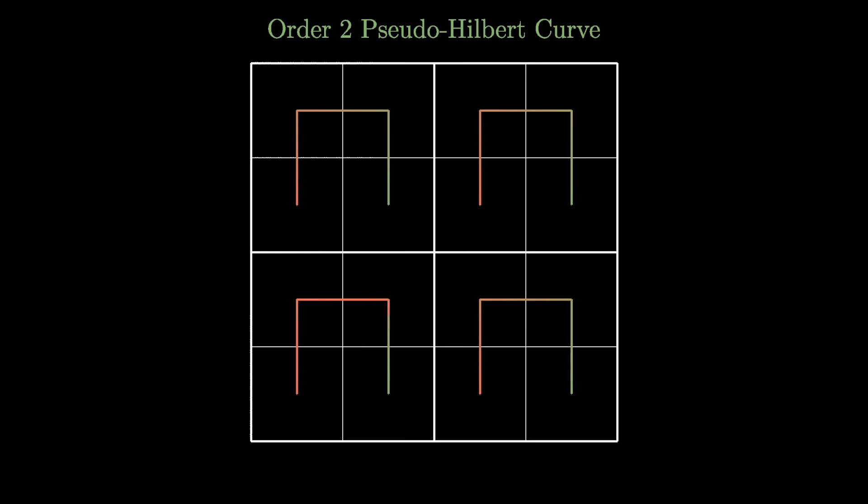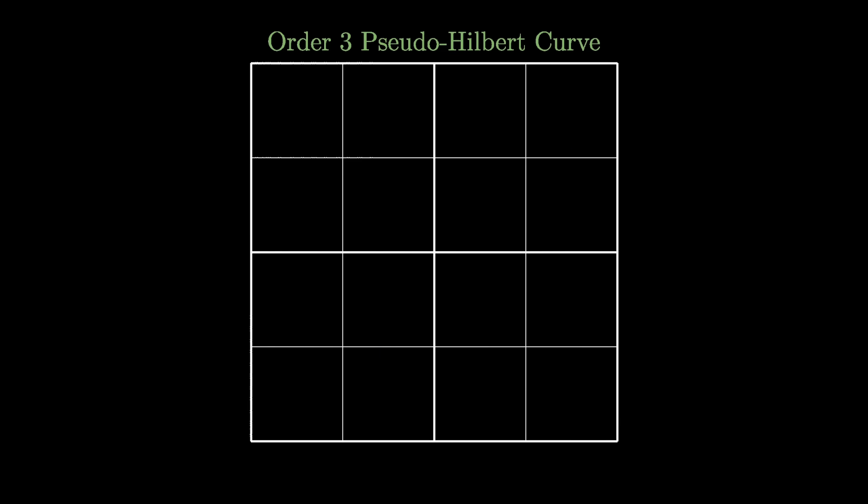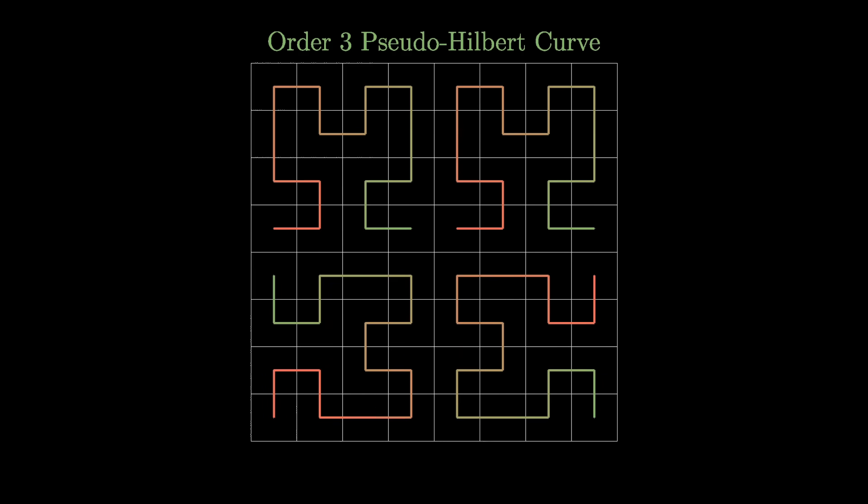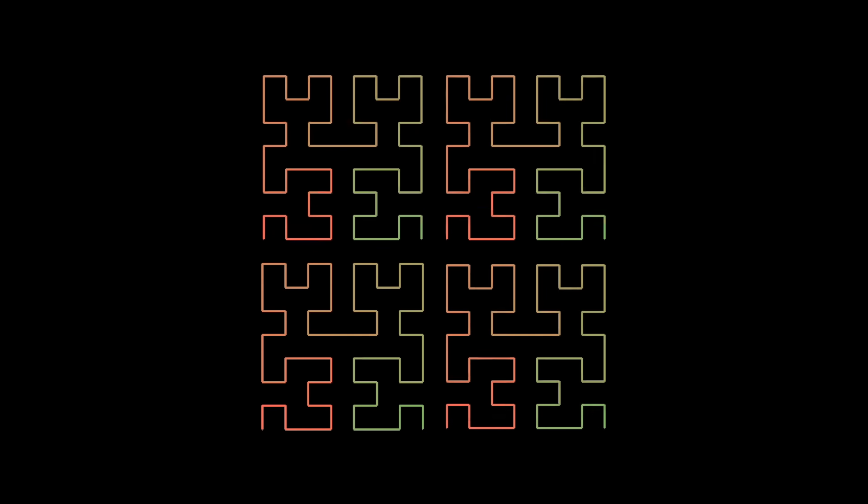If we left those mini curves oriented as they are, going from the end of the mini curve in the lower left to the start of the mini curve in the upper left requires this kind of awkward jump, same deal with going from the upper right down to the lower right, so we flip the curves in the lower left and the lower right to make that connection shorter. Going from an order 2 to an order 3 pseudo-Hilbert curve is completely similar. You divide the square into an 8x8 grid, then you put an order 2 pseudo-Hilbert curve in each quadrant, flip the lower left and the lower right ones appropriately, and then connect them all, tip to tail. And the pattern continues like that for higher orders.